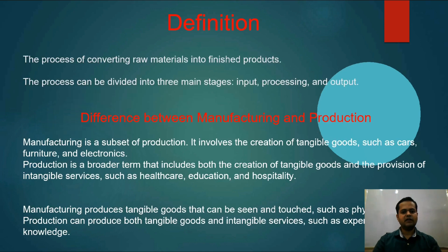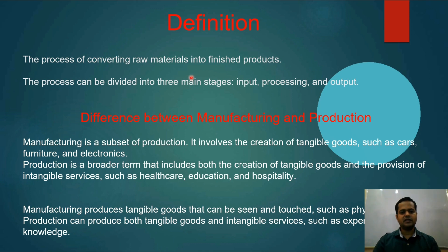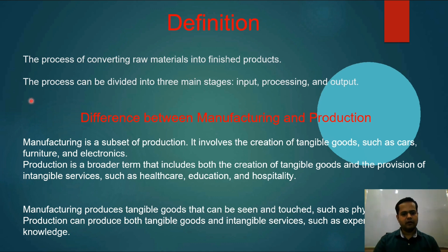Let us start with the definition of the manufacturing process. What is the manufacturing process? The process of converting the raw materials into the finished good products. The process can be divided into three main stages: first is the input, processing, and output.